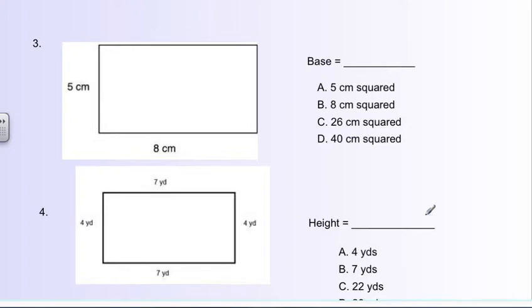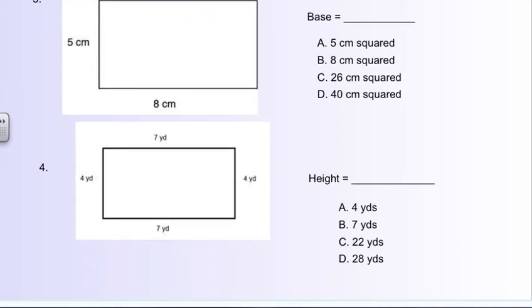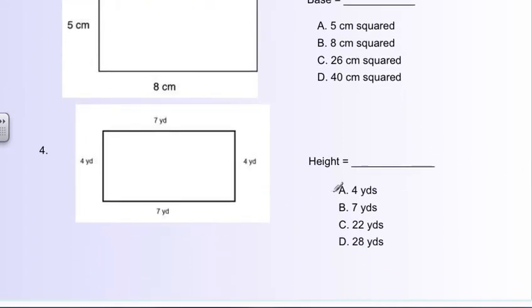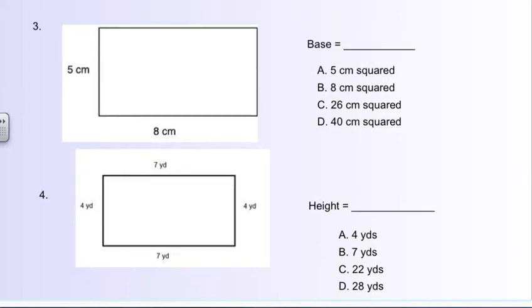Number three, I'm not going to say much. Look at this information. Choose from this information and figure out, this one's not asking for the area. It is asking for the base. So which one of those lines up with the base? Number four, look at this. Look at all this. What is it asking for? And answer the question.